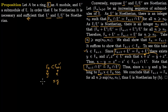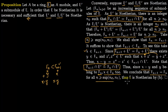Since y lies within Fn and x minus y also lies within Fn, their sum lies within Fn, so x lies within Fn — which is what we wanted to show. Therefore Fn+1 equals Fn for all n greater or equal to sup of n0 and n1, and therefore E is Noetherian by condition B.